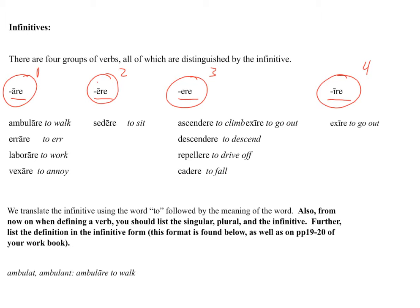The way that we tell which conjugation a verb belongs to is by its infinitive. So words that we've had so far, like ambulare — that A-R-E tells us that ambulare is part of that first conjugation. The A-R-E of inarare tells us that it's also part of the first conjugation. These words will never have the long E-R-E infinitive, they'll never have the short E-R-E infinitive, and they'll never have that I-R-E infinitive.